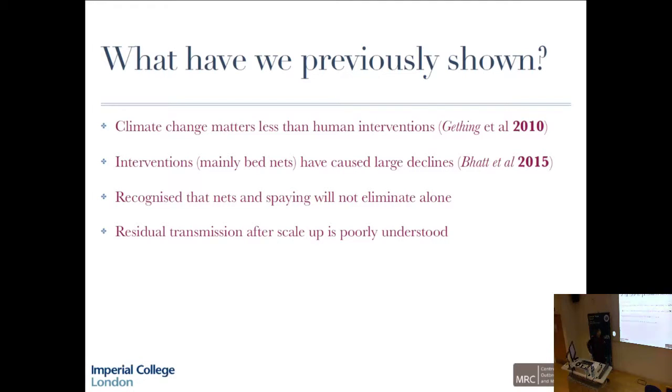What we'd previously shown is that climate change actually matters less and a large amount less than human interventions. This was shown by Pete Gething a while back. If you look at the historical changes from 1900 to now, even if you look at the historical changes over the last 10 years, climate isn't playing the decisive role in why prevalence is going up and down. It's predominantly driven by human interaction. More recently we showed that interventions actually have had a huge impact and caused large declines. A real success story that's happened over the last 15 years, thanks to a large international effort.